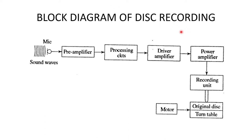The block diagram of disc recording shows: your microphone converts sound waves into an electrical quantity, given to the pre-amplifier, then to the processing circuit, then to the driver amplifier, then to the power amplifier, then to the recording unit. The recording unit records the data on the original disc which is kept on the turntable. The turntable allows the disc to move in a circular manner, and is connected to a motor which allows it to rotate to the required position.